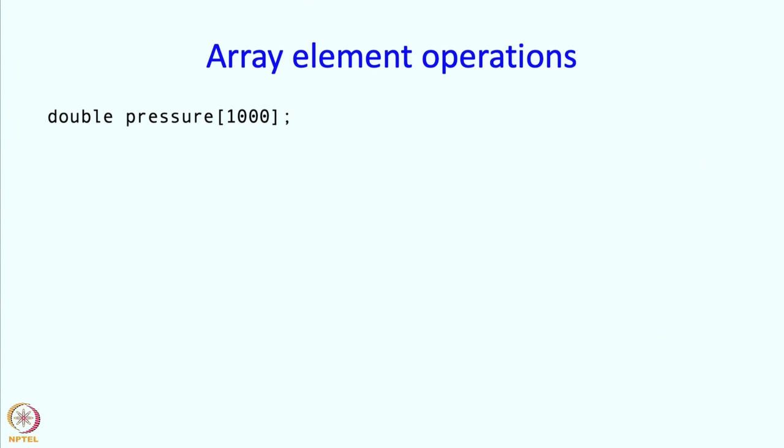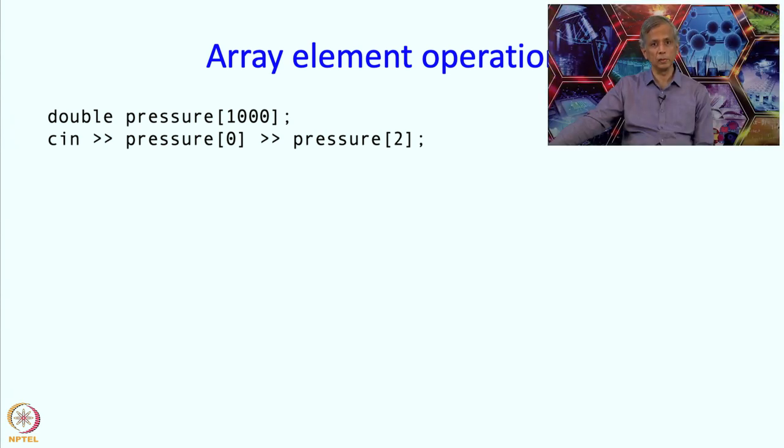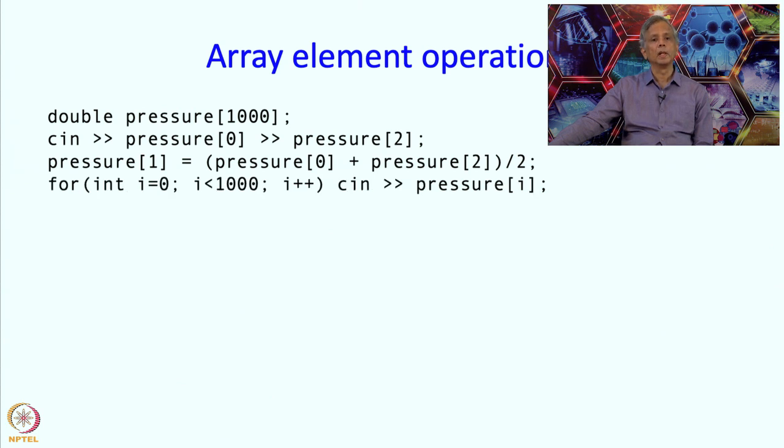So what can you do with arrays? Well suppose we have declared our array in this manner then I can read into its elements. If I say cin and instead of putting in the name of some simple double variable, I put in pressure[0] which is also a variable, this would cause whatever the user types, the first thing to go into pressure0 and the second thing to go into pressure2. You can use array elements basically wherever you can use ordinary variables. I could write this for example, saying that pressure[1], the element of the array pressure at index 1 is assigned the value which is the mean of the values of pressure[0] and pressure[2].